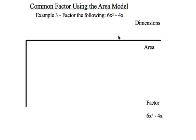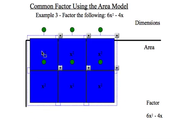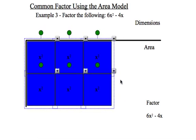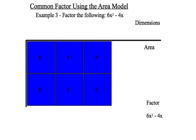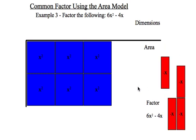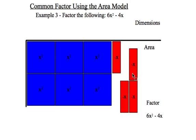My last example will be 6x² - 4x. I'm going to learn from my previous example and bring in all of my x squared terms at once in a nice rectangle to start the problem. I have these four negative x terms to place, and I'm going to learn from the previous example as I said.